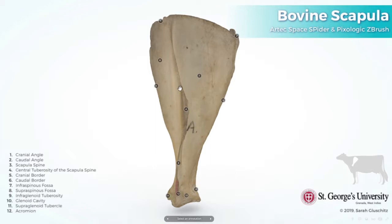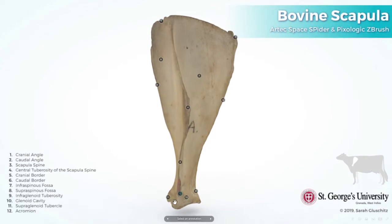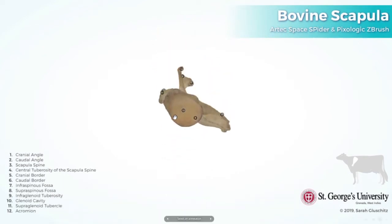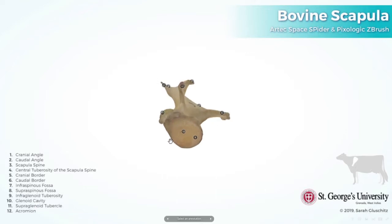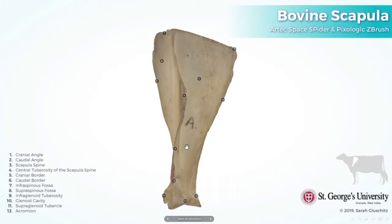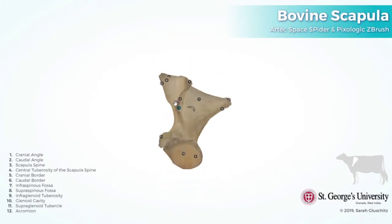Tuberosities: at the middle part of the spine there is a large prominence called the spinal tuberosity. Below the glenoid cavity there is a large prominence called the infraglenoid tuberosity. At the end of the spine there is a prominence called the acromion.